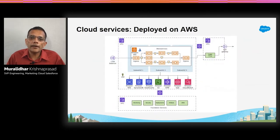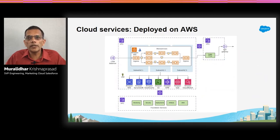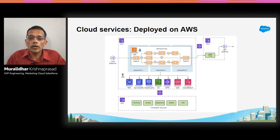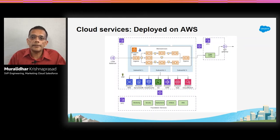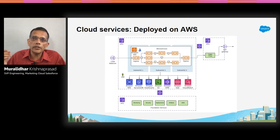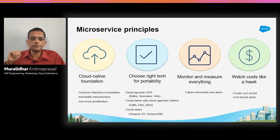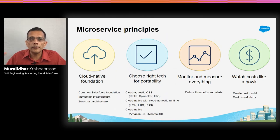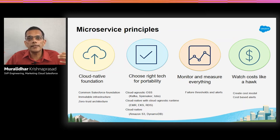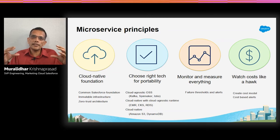At a 50,000-foot level, the customer data platform is a set of microservices using a whole bunch of AWS services. We use a load balancer for getting all the requests. Everything runs on Kubernetes clusters. We have our ingress gateways and outbound, we have the public proxy, and all of this is protected via a VPC. Before going into each service, it's important to look at the service principles we used when we built all of this. There are about four things we really did. First is the cloud-native foundation — a common foundation so that as we go to other clouds, we don't re-implement things. These include common things like security key vaults, monitoring systems, debugging and measurement, and our CI/CD systems.